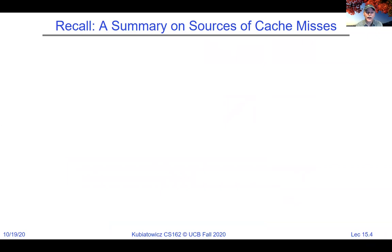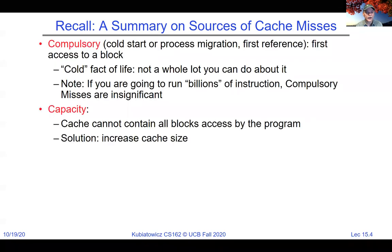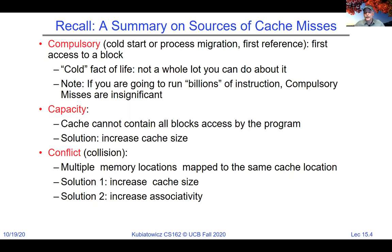At the end of last lecture we were starting on sources of cache misses. I call these the three Cs plus one. Mark Hill, when he was a graduate student here, came up with three Cs representing cache miss sources — he went on to be a well-known computer architect at University of Wisconsin Madison. The three Cs are compulsory, capacity, and conflict. A compulsory miss is one where the address has never been seen before, so the cache couldn't have had it. The only way around a compulsory or 'cold' miss is a prefetching mechanism. Capacity and conflict misses are more interesting.